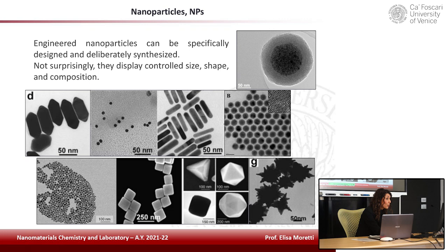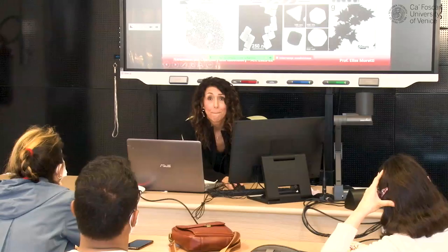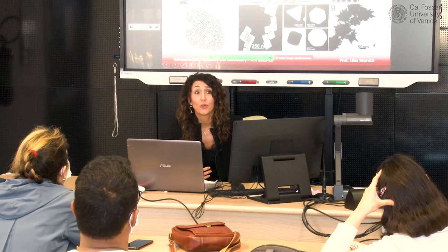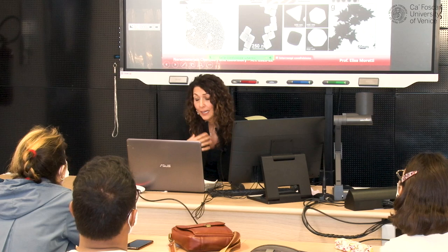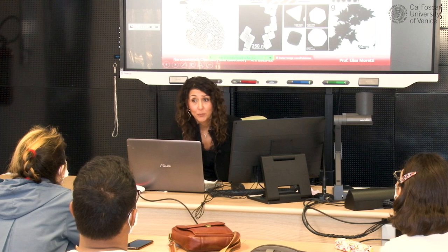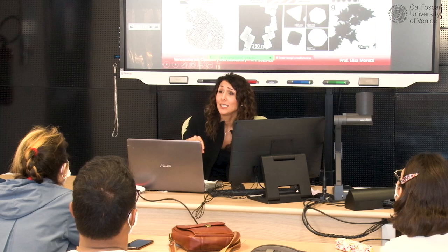Nanoparticles may also contain layers with different chemical compositions — for example, a core-shell system where the core is gold and the shell is made of silica, silicon dioxide, coated with specifically chosen antibodies. We are going to prepare in the lab a core-shell system made up of a core of silica and a shell of gold nanoparticles.